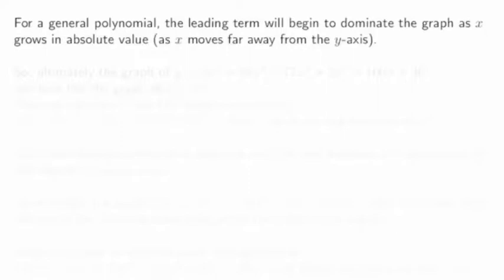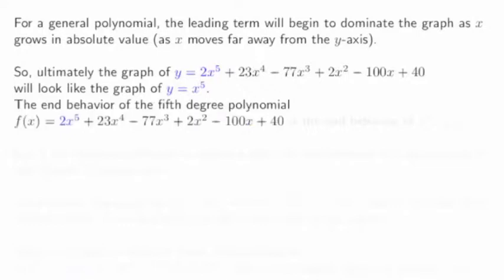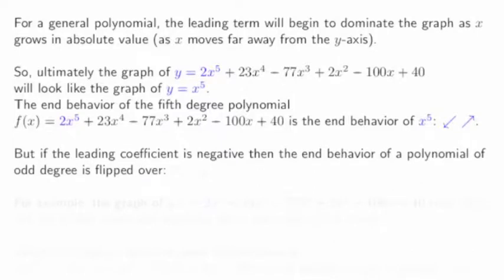For a general polynomial, the leading term will begin to dominate the graph as x grows in absolute value, as x moves away from the y-axis. So if we're given a polynomial like y equals 2x to the fifth plus some other terms, the end behavior of that graph will look like y equals x to the fifth. As x gets large, x to the fifth is much, much larger than anything involving x to the fourth, x cubed, or x squared.